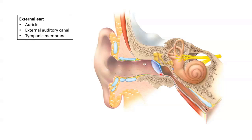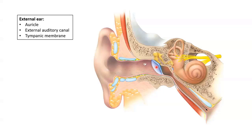The tympanic membrane, also known as the eardrum, is a thin partition between the external auditory canal and the middle ear, forming the boundary between these two regions. Regarding the functions of these structures: to hear, sound waves are collected from our external environment and directed into our external auditory canal by our auricle. The external auditory canal directs sound waves onto our tympanic membrane. The sound waves hit the tympanic membrane, causing it to vibrate, and these vibrations are passed on to our middle ear. The tympanic membrane also plays a small role in protection, keeping bacteria and foreign objects out of the middle ear.